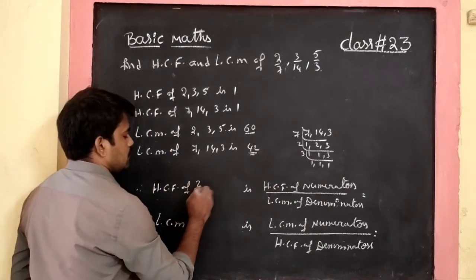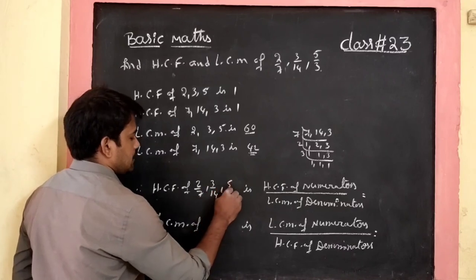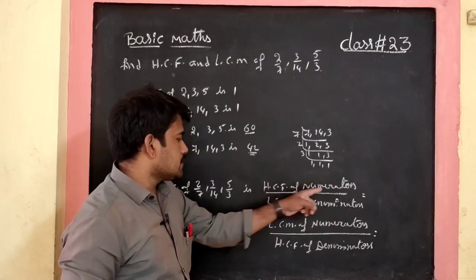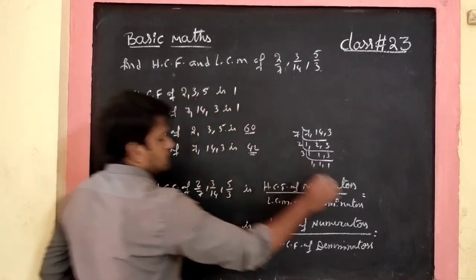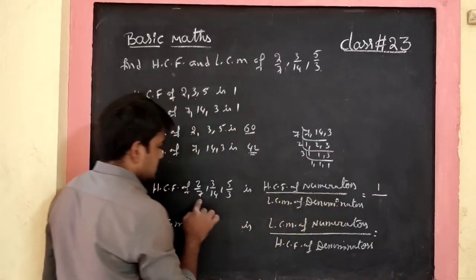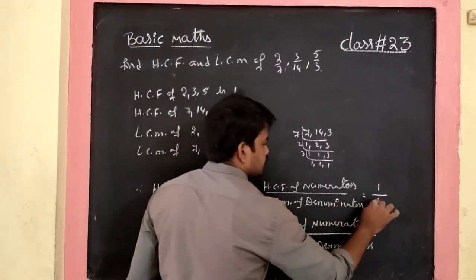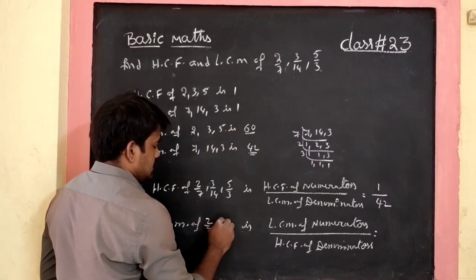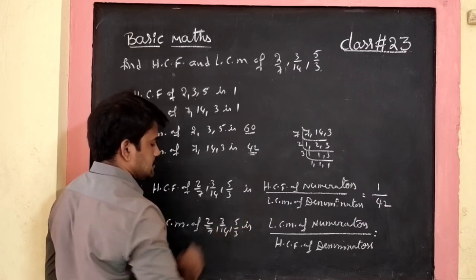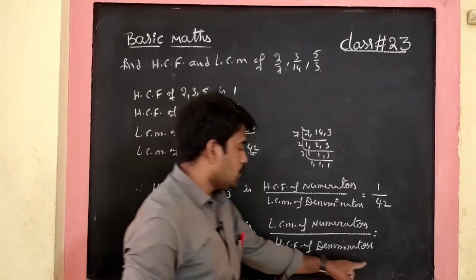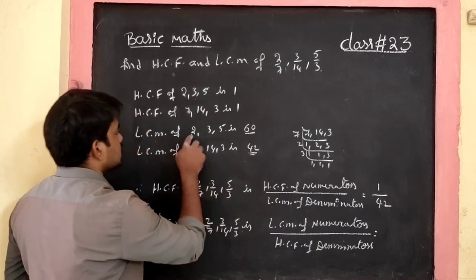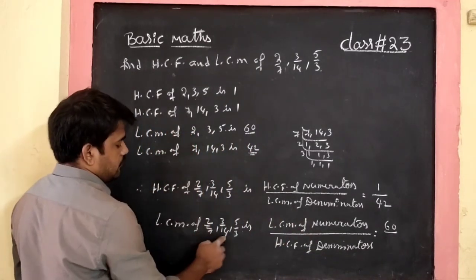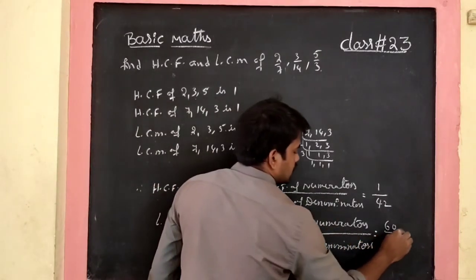So HCF of 2/7, 3/14, 5/3 equals HCF of numerators by LCM of denominators. HCF of numerators 2, 3, 5 is 1, and LCM of denominators 7, 14, 3 is 42. So HCF = 1/42. For LCM: LCM of numerators 2, 3, 5 is 30, and HCF of denominators 7, 14, 3 is 1. So LCM = 30.